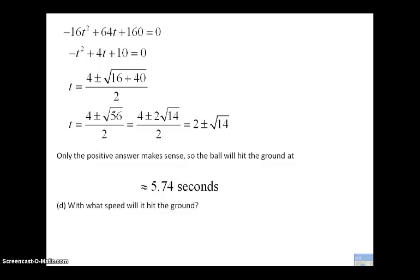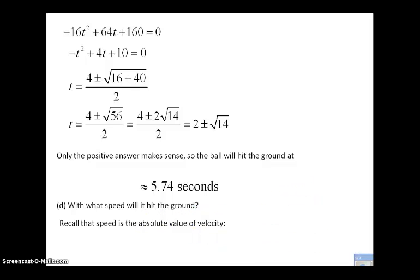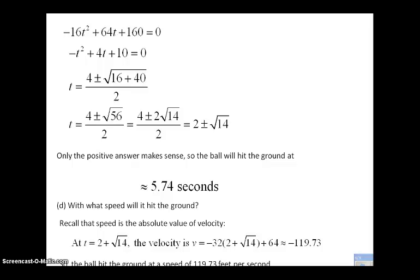With what speed will it hit the ground? Remember, speed is the absolute value of velocity. We found the velocity function to be negative 32t plus 64 and we said that it hits the ground at t equals 5.74 seconds. So I'm looking for v of 5.74 seconds. If that's a negative value, then I'm just going to take the absolute value of it. And it is. It's negative 119.73. So again, speed's the absolute value of velocity, asked in words, answer in words.